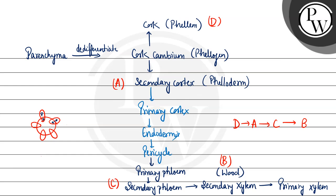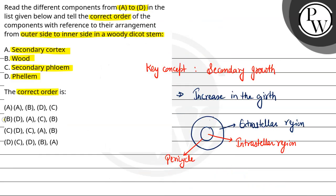Tab options mein aisa dekhte hain sequence. Option B mein yahi sequence diya hai D, A, C and then B. So the final answer is option B.